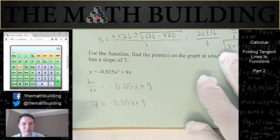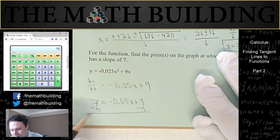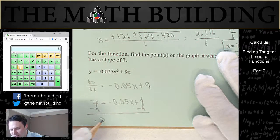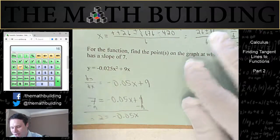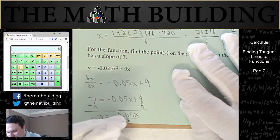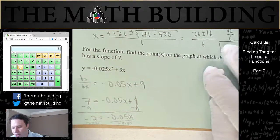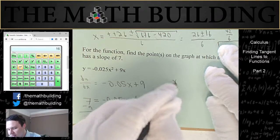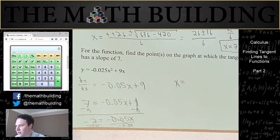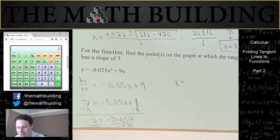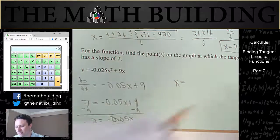And now it's just as simple as solving this equation. So we subtract 9 on both sides. Negative 2 is equal to negative 0.05x. Almost there, now we just divide by negative 0.05. So that cancels. So we're going to get x is equal to, and that will become a positive number. And 2 divided by 0.05 is equal to 40.